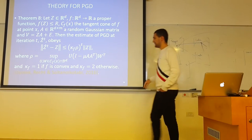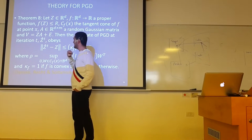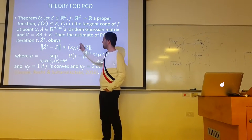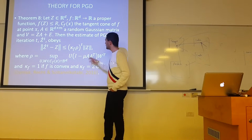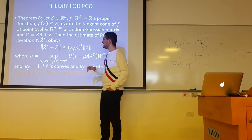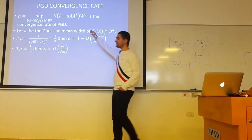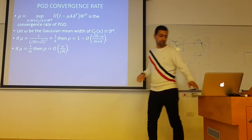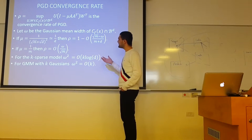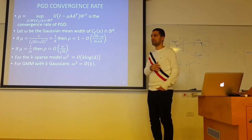A very nice result by Oymak, Recht, and Soltanolkotabi showed that the convergence rate of the projected gradient algorithm scales as kappa times rho to the power of the number of iterations, times the norm of the vector we are trying to recover. This convergence rate depends on something related to the ambient dimension of the vectors and the Gaussian mean width of the descent set of function F. For sparse vectors with the L1 norm, the square of the Gaussian mean width is approximately the sparsity times log of the ambient dimension.